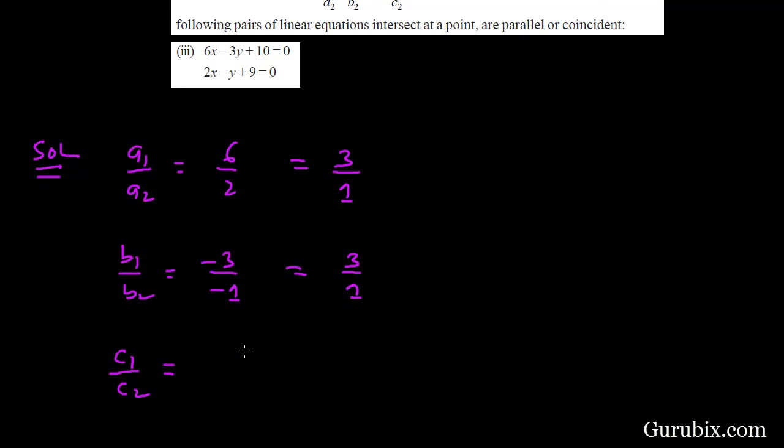And if we calculate c1 over c2, this is equals to 10 over 9. Here we observe that a1 over a2 is equals to b1 over b2, but not equals to c1 over c2.